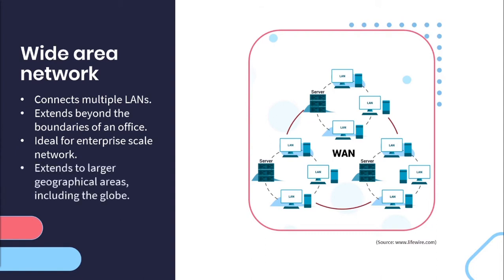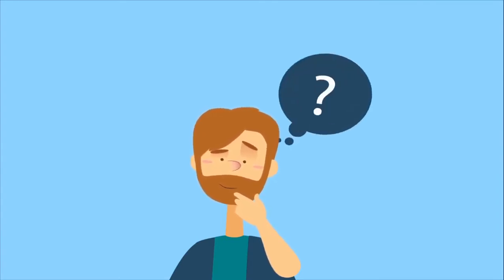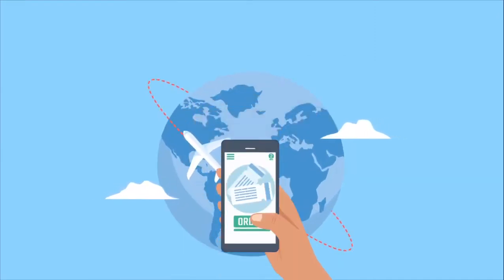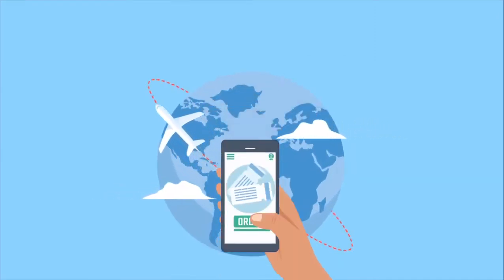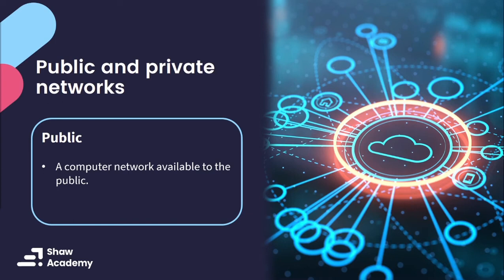A WAN extends to a larger geographical area — this can include the entire globe. I want you to pause and think of an example of a WAN. The perfect example is that the internet itself is an example of a WAN, because there is no geographical restriction on the internet. Apart from LANs and WANs, a network can also be public or private. In a public network, a computer or device is available to the public over a network — a typical example being the internet. The issue with a public network is that it is often much less secure than a private network, but also cheaper to implement.